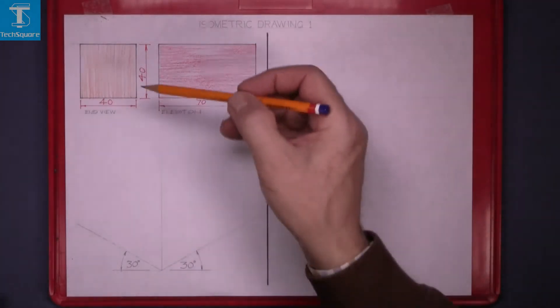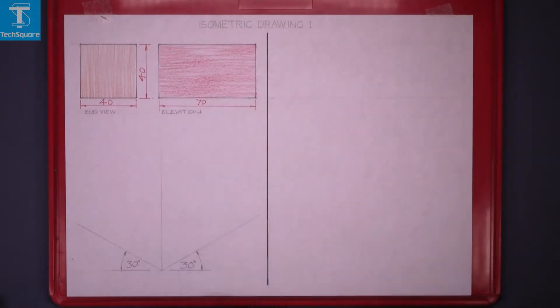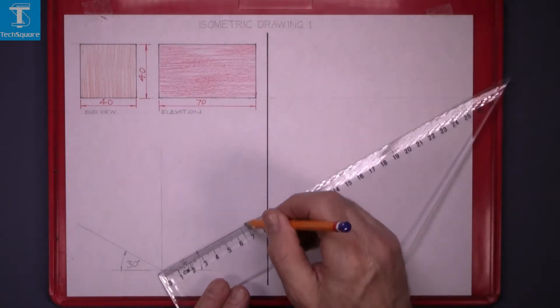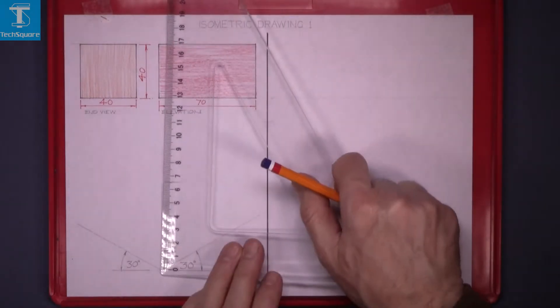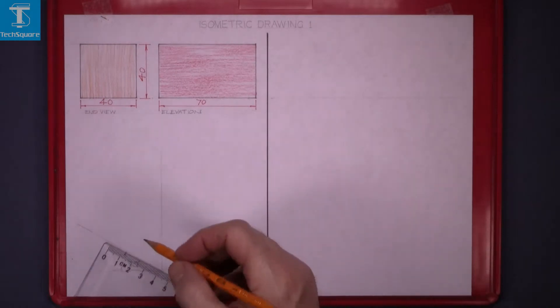So the size of the block is 40 by 40 and 70 long. So measure 70 along that line and 40 high and 40 in thickness.